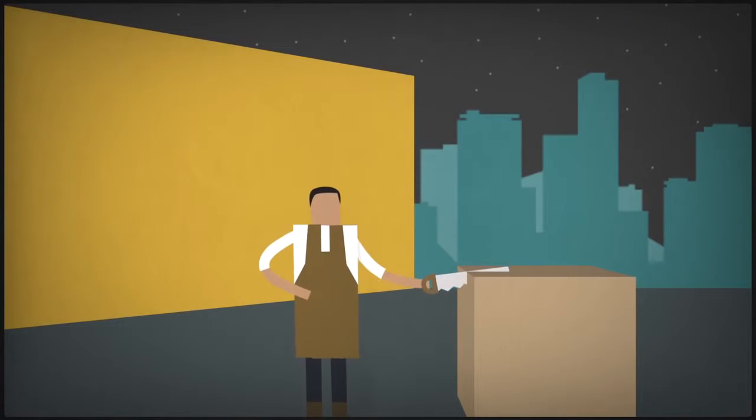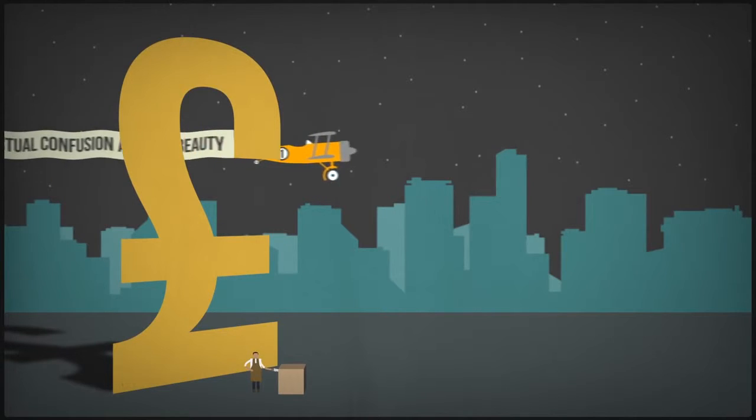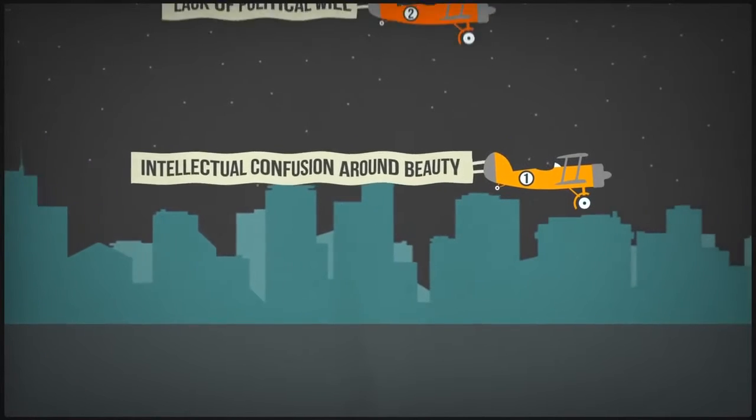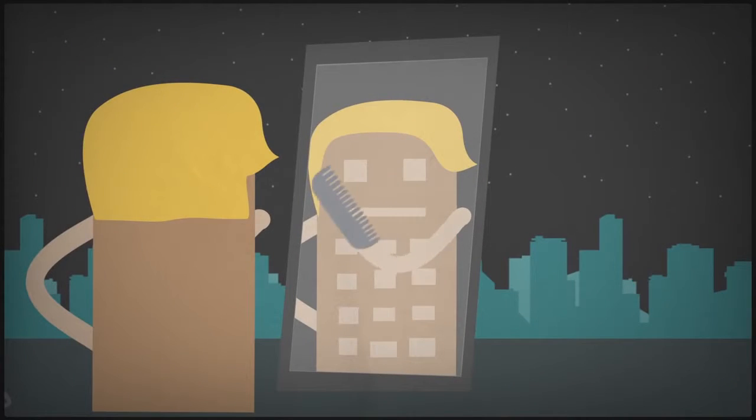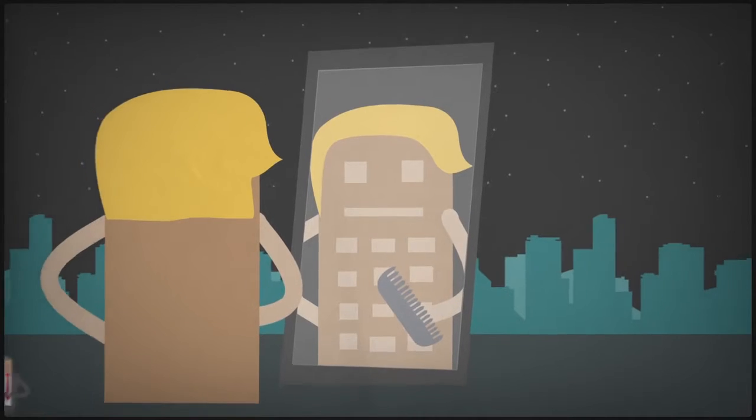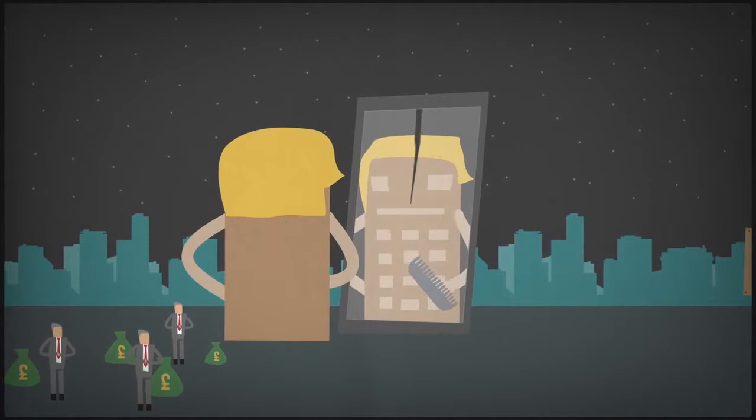The obstacles to building beautiful cities are not economic. Collectively, we've got enough money. We face two main problems. Firstly, an intellectual confusion around beauty and secondly, lack of political will. The intellectual confusion is, we think no one has a right to say what's beautiful and what's ugly. We get worried about who decides. We think beauty is subjective, so surely no one should say anything about it. It's a very understandable qualm, but it's horribly useful to greedy property developers. It's such a relief to these people to learn that there is no such thing as beauty. It means they can get away with murder.